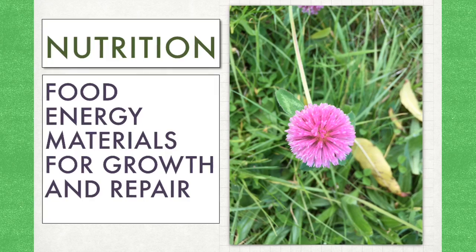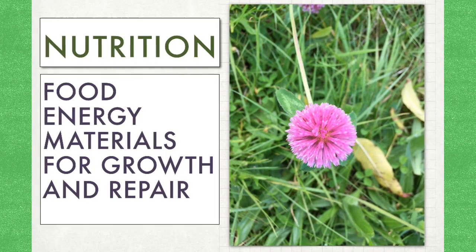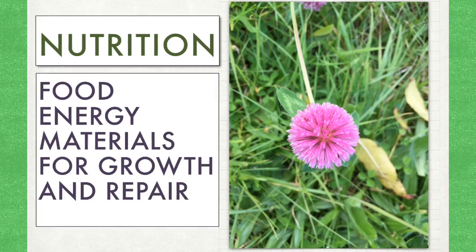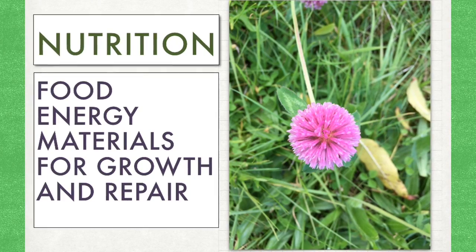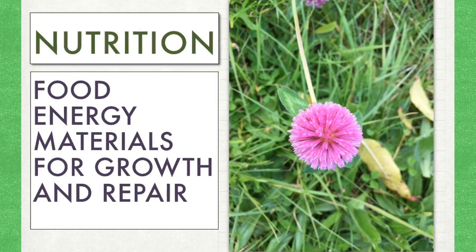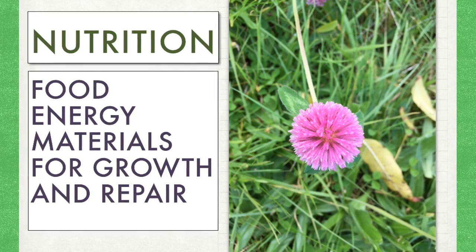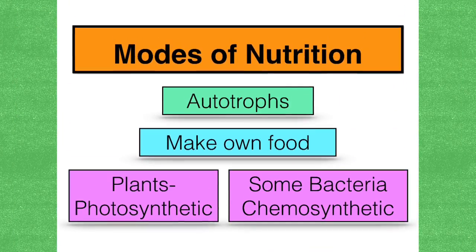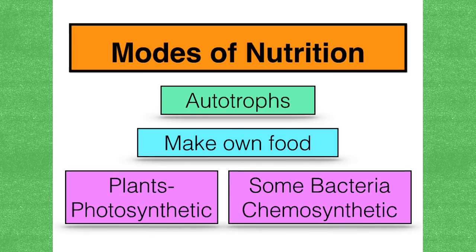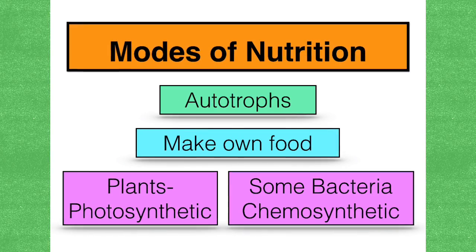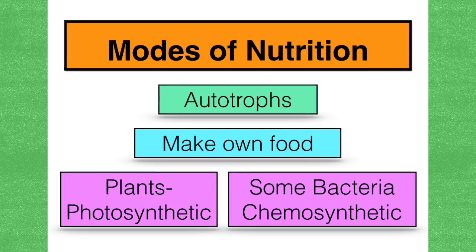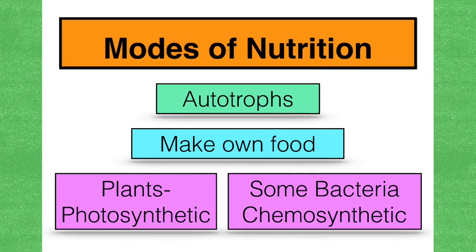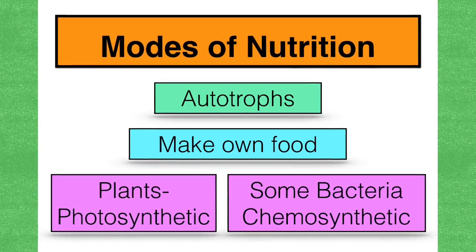Nutrition is the way in which living things or organisms obtain and use their food. Living things break down food to provide energy — energy that fuels their metabolic reactions. They also need food for the provision of raw materials necessary to repair damaged cells and tissues and to grow. Some organisms can make their own food and they are known as autotrophs. Plants are autotrophs because they can photosynthesise. Some bacteria are autotrophs because they can make their food using energy released from chemical reactions — you'll meet these in the nitrogen cycle.